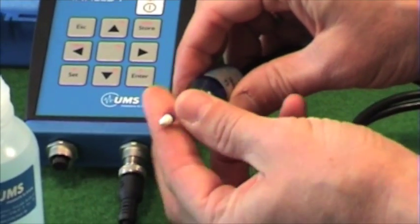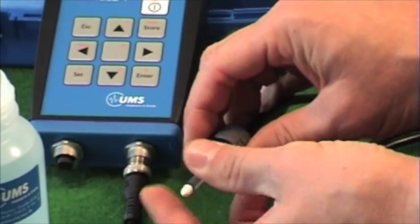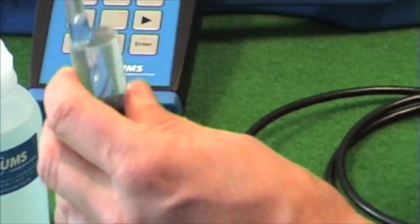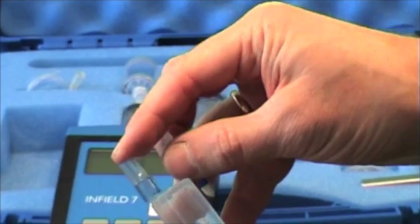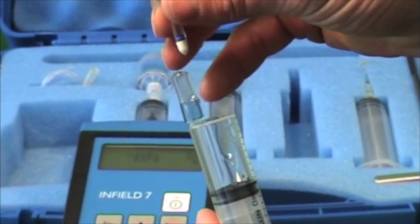To disassemble the shaft, hold the sensor body and turn off the shaft counterclockwise. Remove all bubbles and push the syringe over the ceramic end.